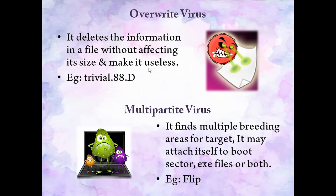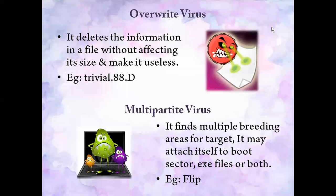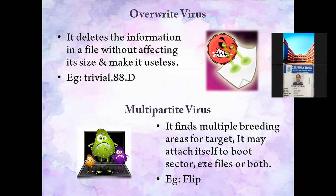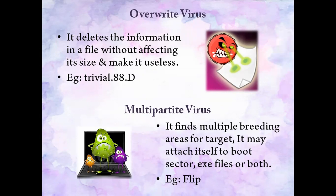Next is overwrite virus. Overwrite virus deletes the information in your file without affecting its size, making the file useless — your entire data will be deleted from the file but the file size will not change. An example of this type of virus is Trival88D. Next is multi-party virus — it finds multiple breeding areas to target. It may attach itself to both the boot sector and .exe files, starting in multiple locations saved across your system.